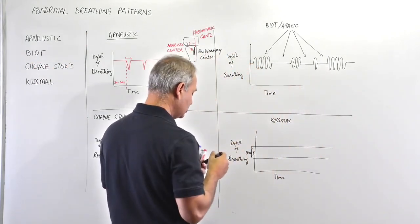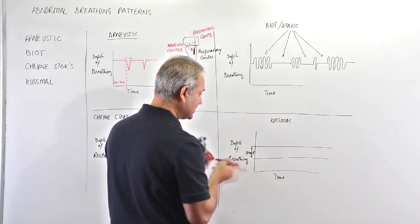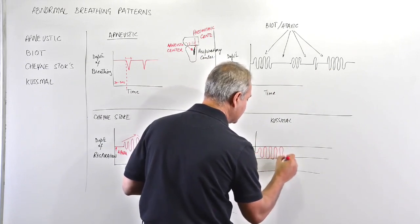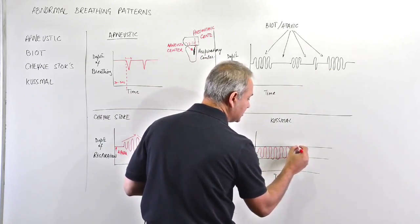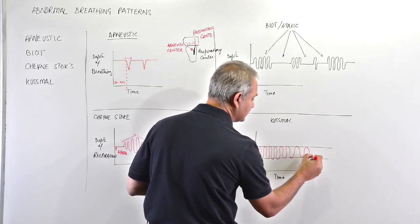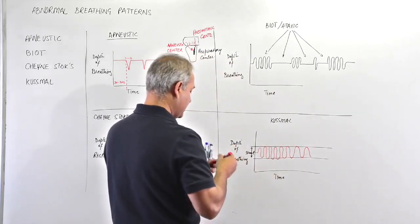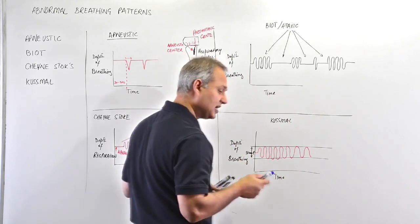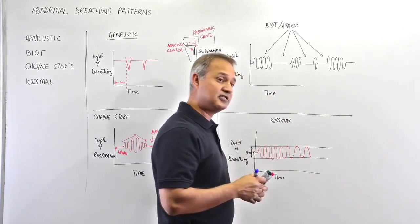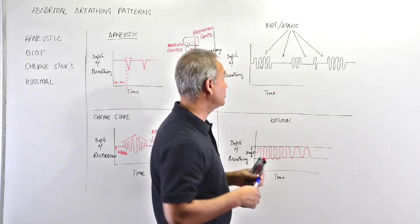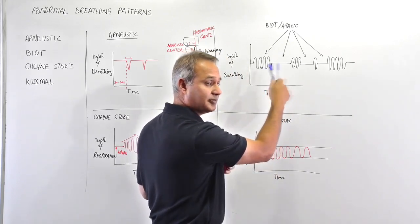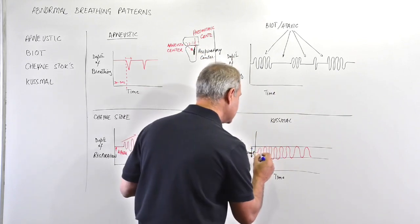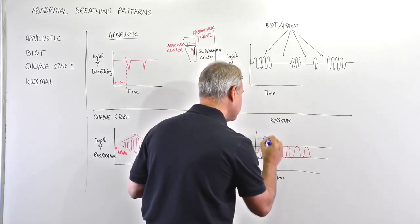Then there is Kussmaul breathing. Let me say here is normal tidal breathing of a person - 500 milliliters, right? Inspiration, expiration, inspiration, expiration - this is normal. If you exaggerate this, make it labored and heavy, this is normally in diabetic ketoacidosis. This is head injury, especially in the brainstem area.